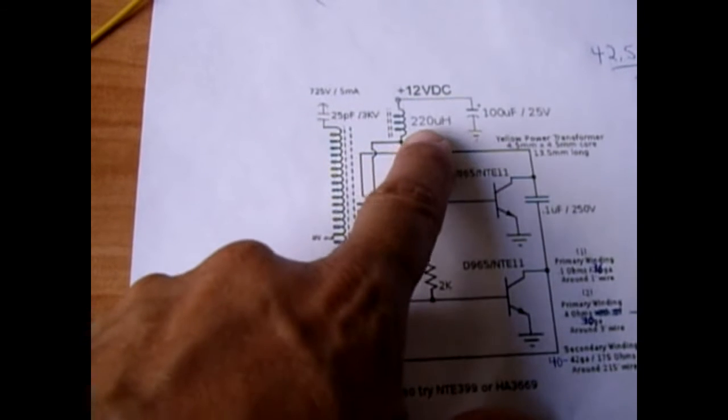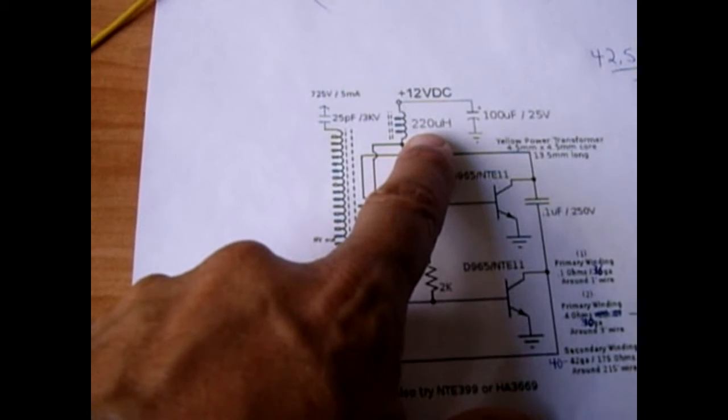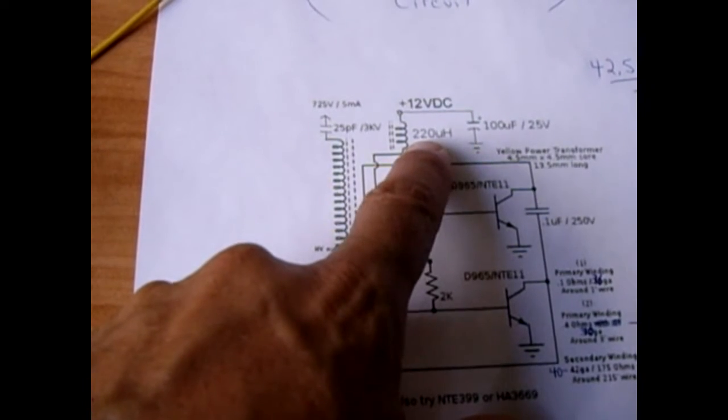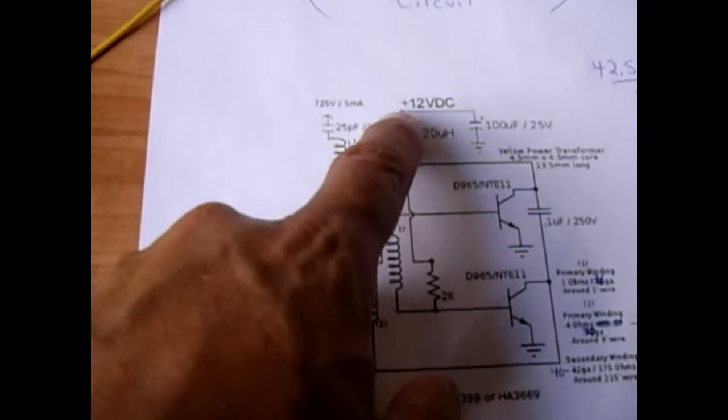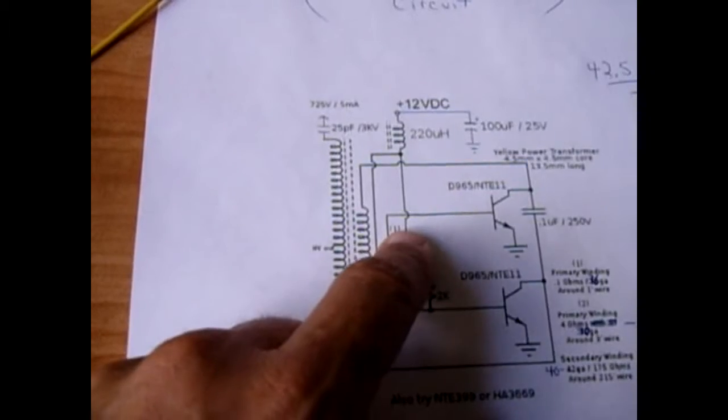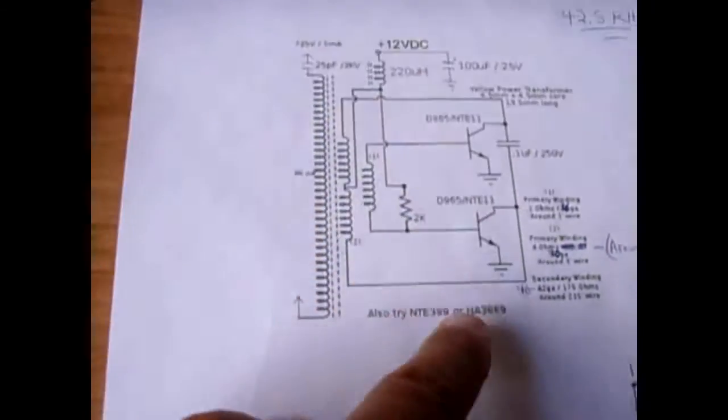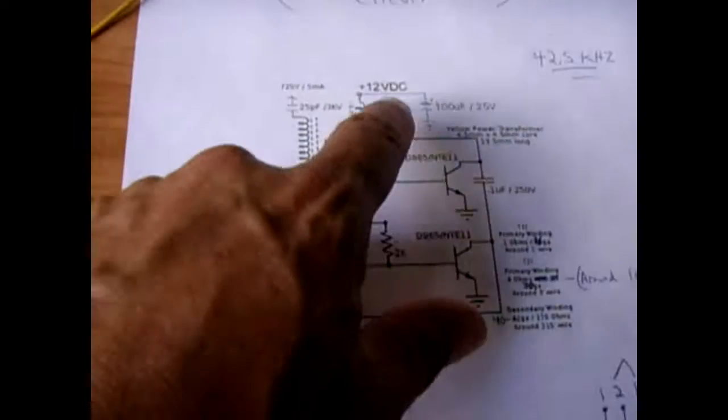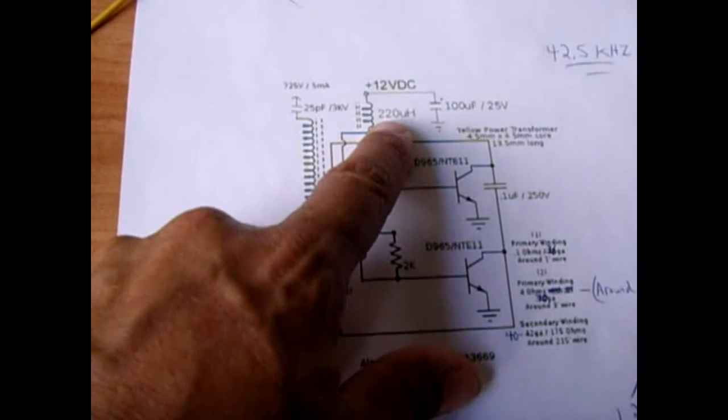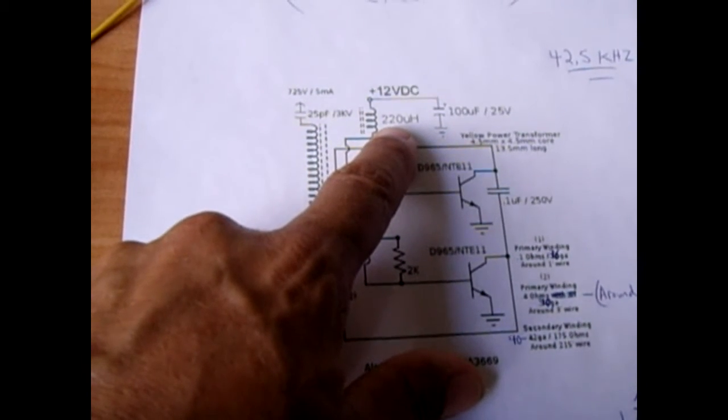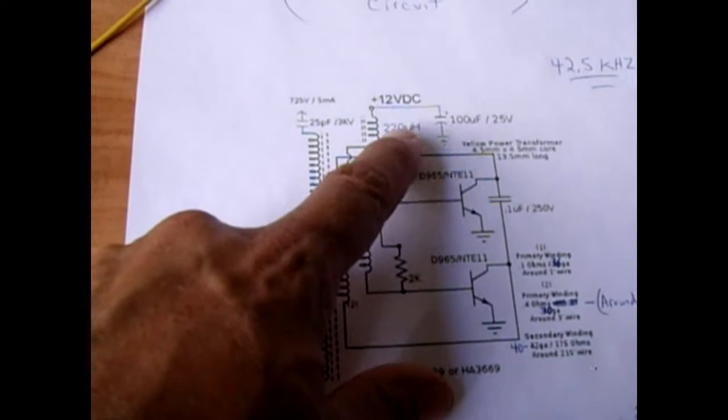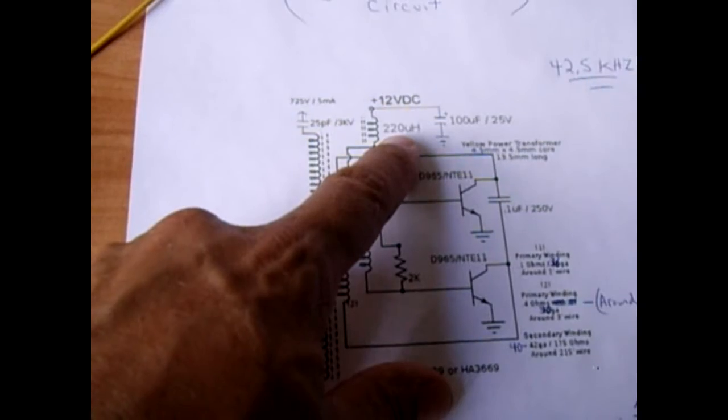Flows through an inductor, 220 microhenries, and this particular component serves two purposes. One, it more or less limits the current into the circuit because this circuit as it's set up draws roughly 420 milliamps. But if you increase this value to say 400 or 500 microhenry, the current will actually drop going to the circuit.